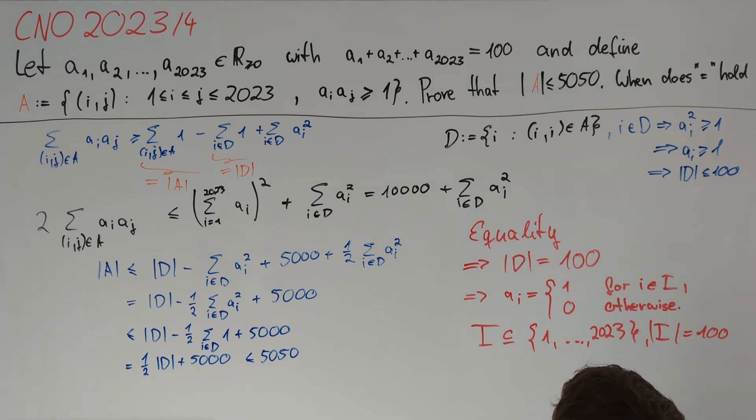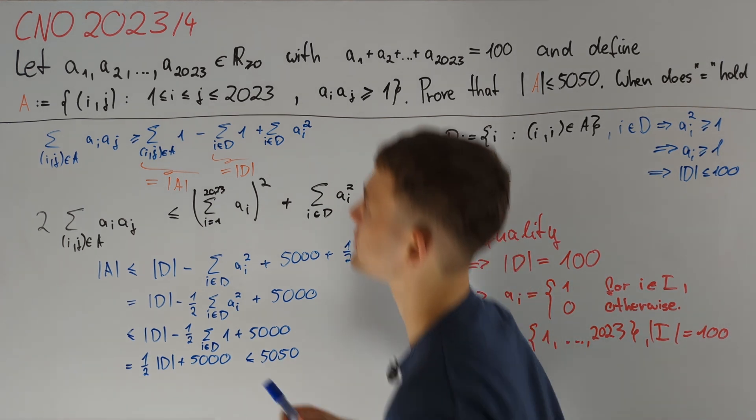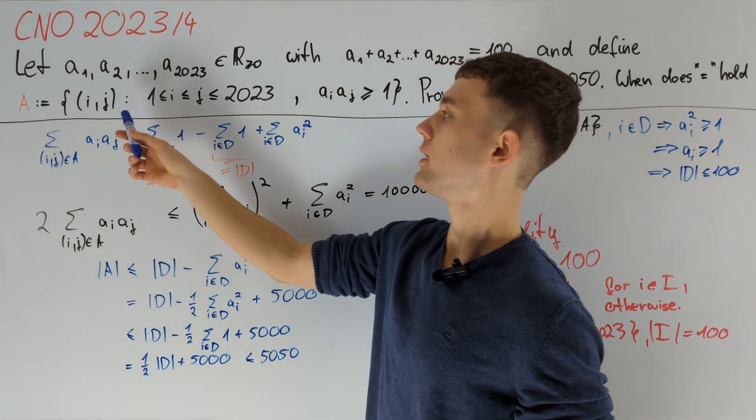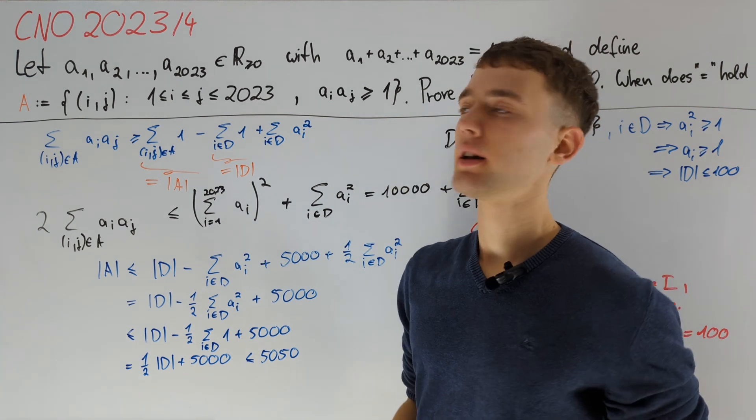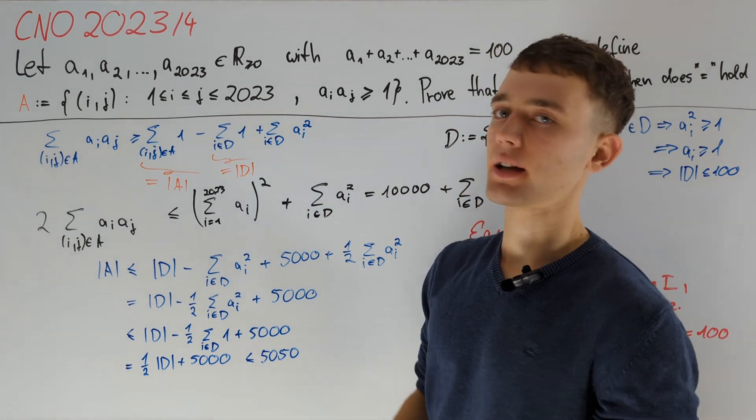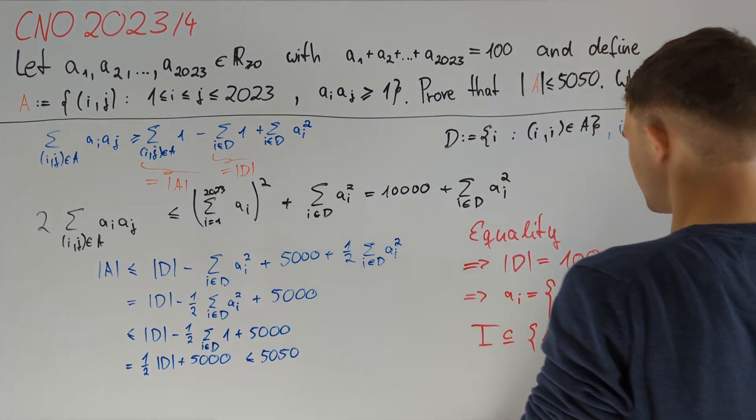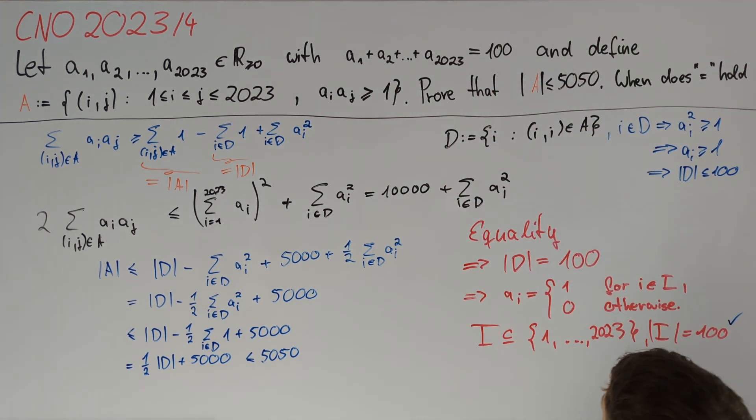Lastly we need to make sure that this construction indeed gives us equality, but in this case A is just the set of i,j both in I such that i is less than or equal to j, and of course this set A has size equal to 5050. So all of these constructions work and therefore we are done.